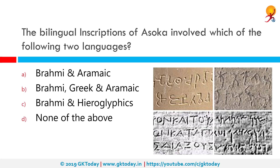The bilingual inscriptions of Ashoka involve which of the following two languages? The correct answer is Greek and Aramaic. Ashoka primarily used four scripts. The scripts used for Prakrit inscriptions were Brahmi and Kharoshti, and for others, Greek and Aramaic.